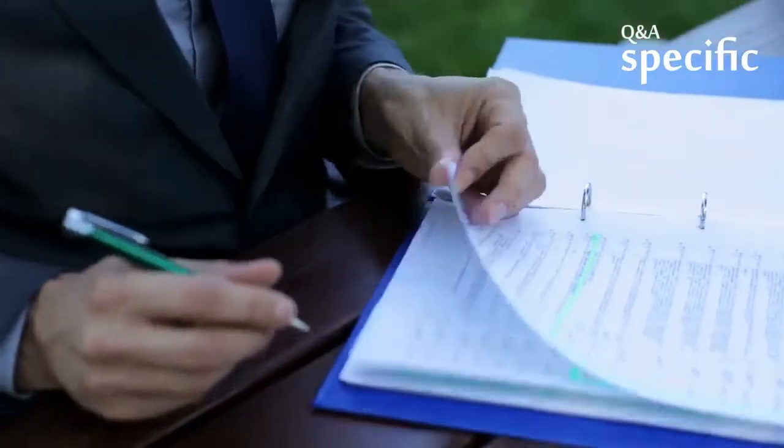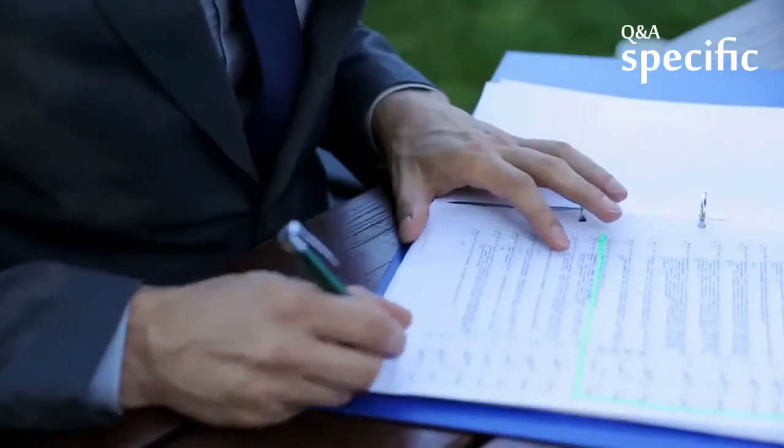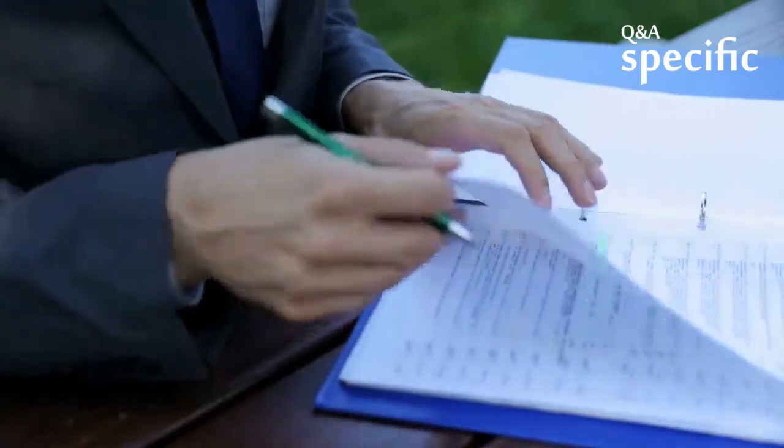Contract theory then tries to tweak the incentive structure to obtain an outcome that is desirable for all players involved.